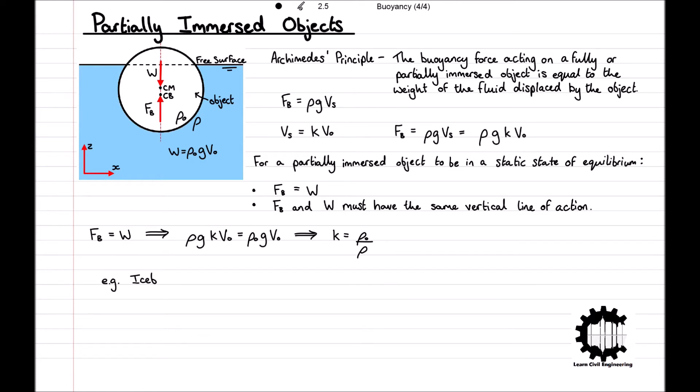For example, icebergs typically have a density of 920 kg/m³ and float in seawater with density 1025 kg/m³. Therefore, the proportion of the iceberg immersed in seawater equals 920 divided by 1025, which equals 0.898, so approximately 90% of an iceberg is immersed below the surface.